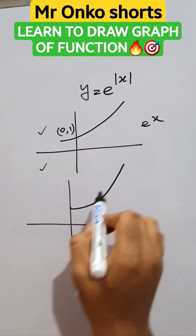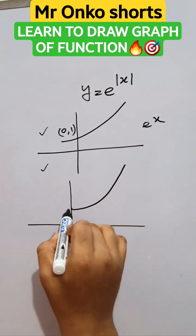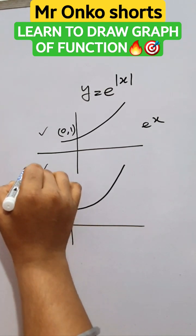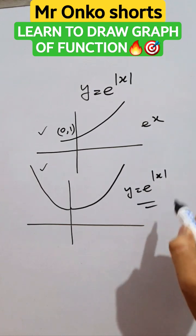Now, we have to take the image of this graph with respect to y axis. So it will be like this. So this is the graph of e to the power mod x.